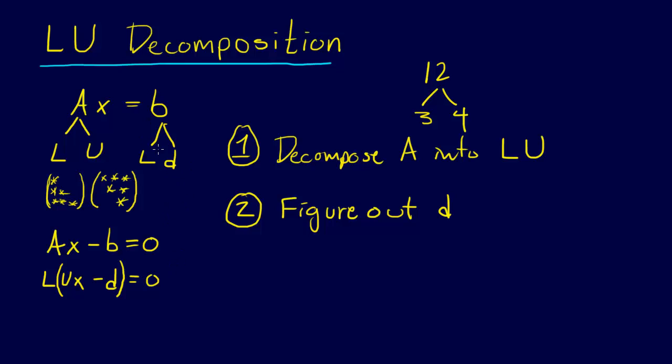Matrix vector product, and we get B. So number two is figure out D, and you have to realize when we do that, what we have for D is the equation LD equals B. This is a simple equation to solve relatively. We have B, we have L, and L has this nice lower triangular structure, and so we can figure out D by doing forward substitution.